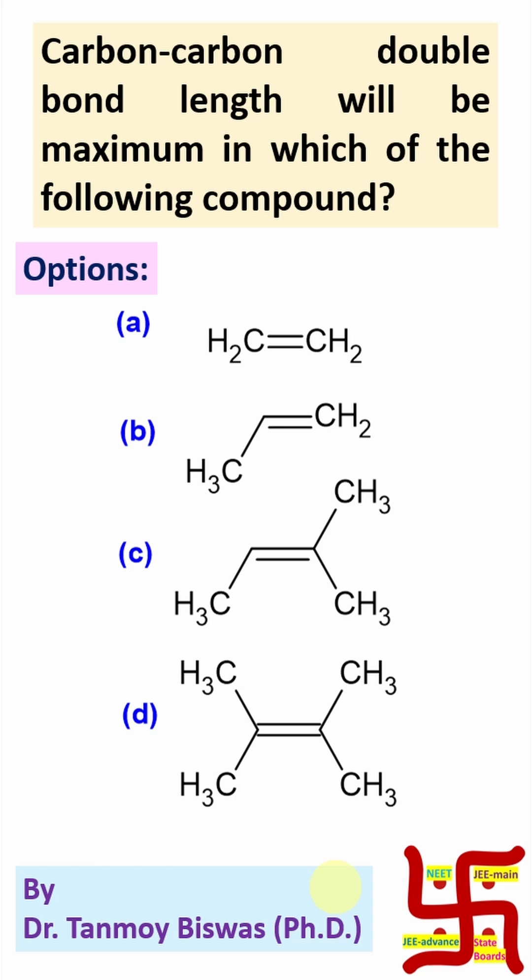Here, if you look at, then I need to find out how many alpha hydrogen present in those alkyls. Here, zero alpha hydrogen, so zero hyperconjugation.